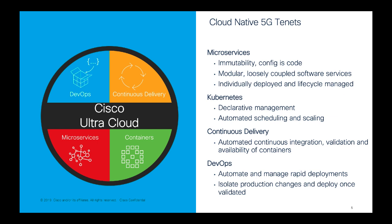Microservices decouple software services so they can be individually deployed and lifecycle-managed. Kubernetes will be the orchestrator used for automation, scheduling, and scaling. On top of that, we need continuous delivery — automated continuous integration, validation, and availability for containers. DevOps is used to automate and manage rapid deployment, isolate production changes, and deploy once validated.